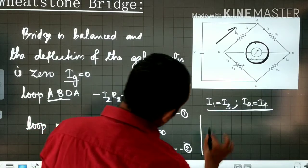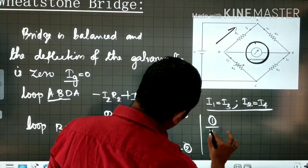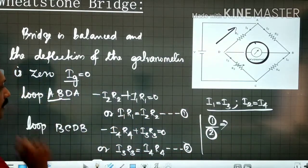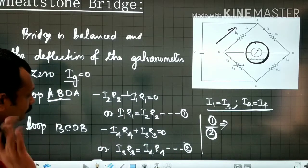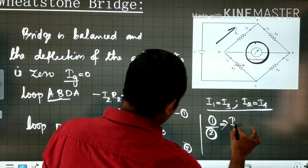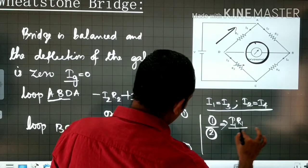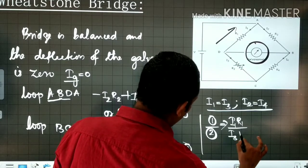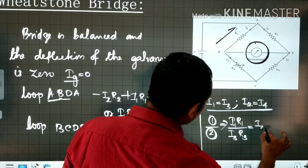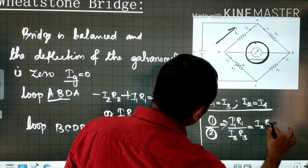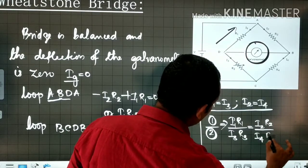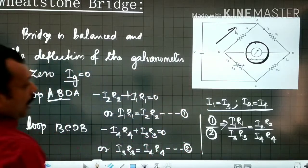Now, equation 1 divided by equation 2 will give you: I1 R1 divided by I3 R3 is equal to I2 R2 divided by I4 R4.